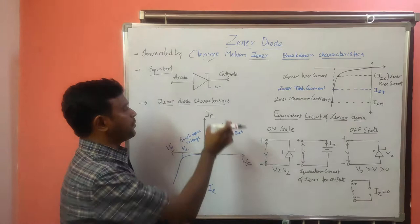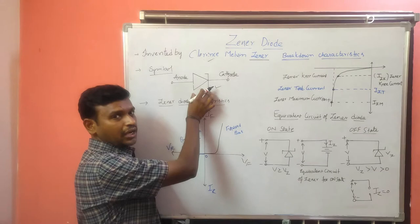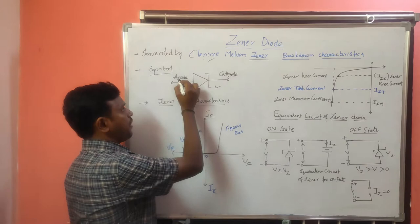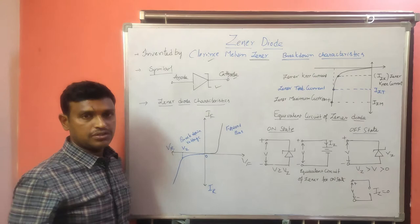If we observe the symbol of the GINA diode, it consists of a normal PN junction diode symbol. Instead of a straight line, we are going to present a Z symbol. So Z indicates GINA. It consists of anode and cathode — that is the symbol of the GINA diode.